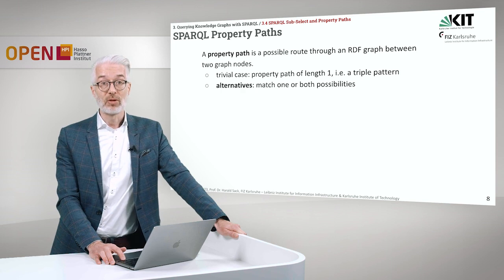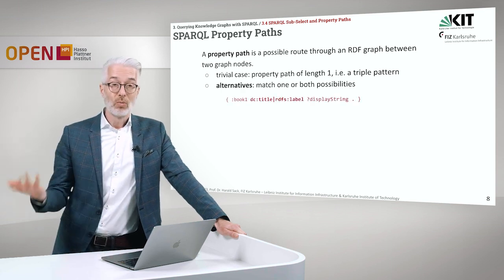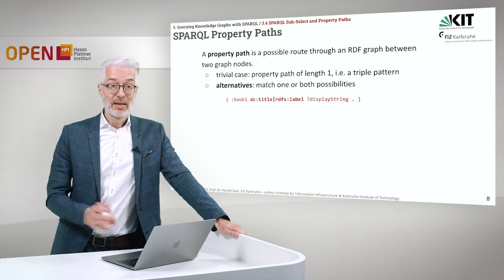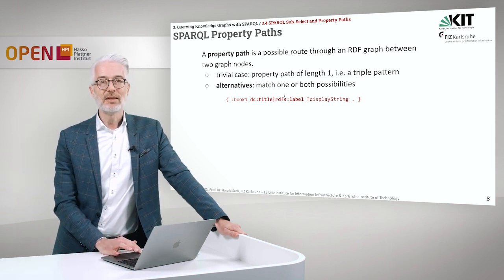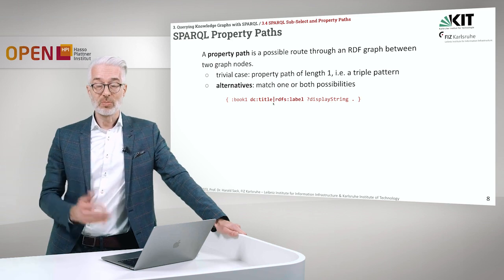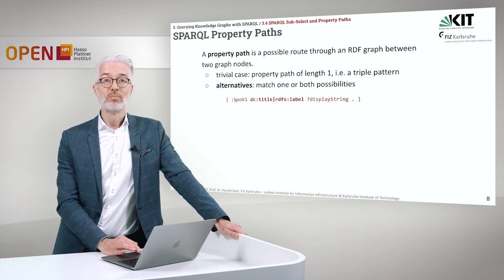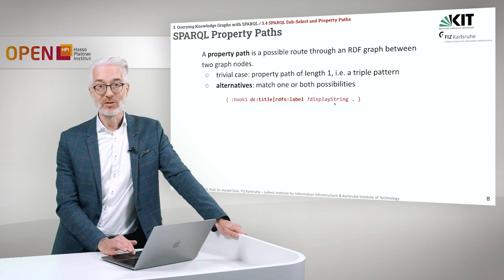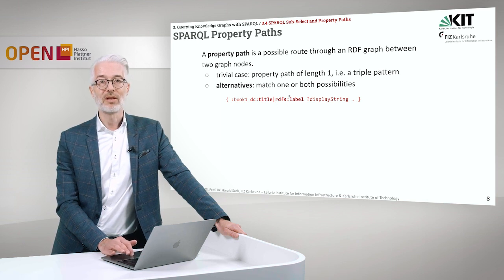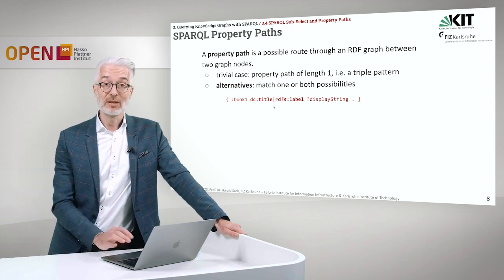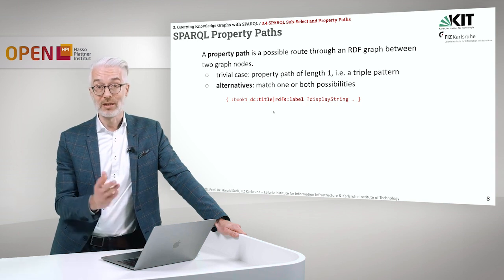One type of property path is alternatives. Using a vertical bar as an OR, you can specify that the path follows either BOOK1/dc:title/displayString OR BOOK1/rdfs:label/displayString. This means we look for a match for one or both of the alternatives given. You can add a third, fourth, and more alternatives as needed.